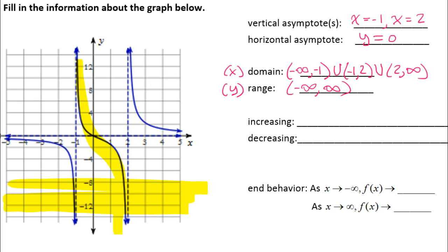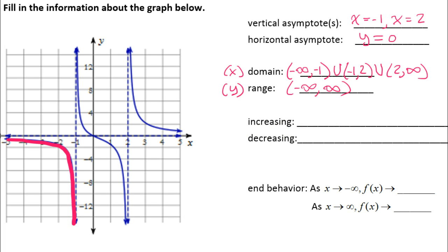Now let's talk increasing and decreasing. When you're doing increasing and decreasing intervals, you are scanning from left to right across the function. From left to right, this first portion of the graph is decreasing — it's going downhill. When writing the interval, only look at the x values. On the x-axis this portion goes from negative infinity to negative one, so we have a decreasing interval from negative infinity to negative one.